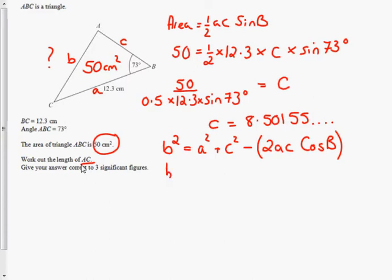That would give me that B squared was equal to 12.3 squared plus... Now I've still got the 8.5015 on my calculator, so I'm going to use the answer button. If you haven't used it before, it's a good idea to use it because you must not round that 8.50155. So 12.3 squared plus answer squared minus 2 times 12.3 multiplied by the answer button again.